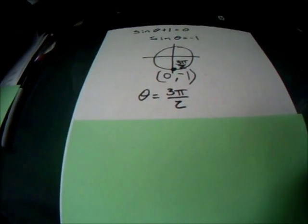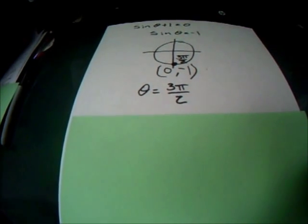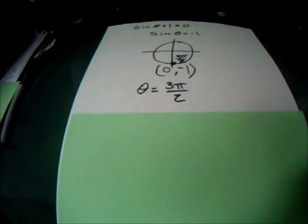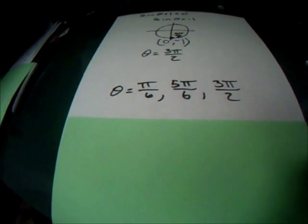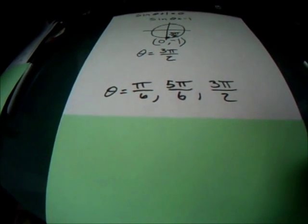So our theta for this side of the problem is 3 pi over 2. Now, we combine the answers from the two portions that we have. And our complete answer for this problem is theta is equal to pi over 6, 5 pi over 6, and 3 pi over 2.